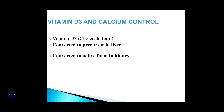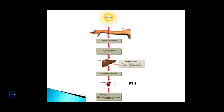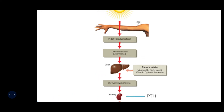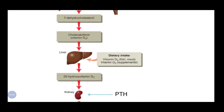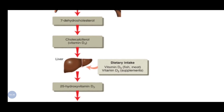Vitamin D3 has a potent effect in increasing calcium absorption from the intestinal tract, but vitamin D3 itself is not the active substance — it has to be converted through many reactions into an active form. Vitamin D3 is known as cholecalciferol. In our skin, there is a substance called 7-dehydrocholesterol. When UV rays from sunlight reach the skin, this 7-dehydrocholesterol is converted into cholecalciferol. This cholecalciferol, also known as vitamin D3, is inactive and is formed in the skin.